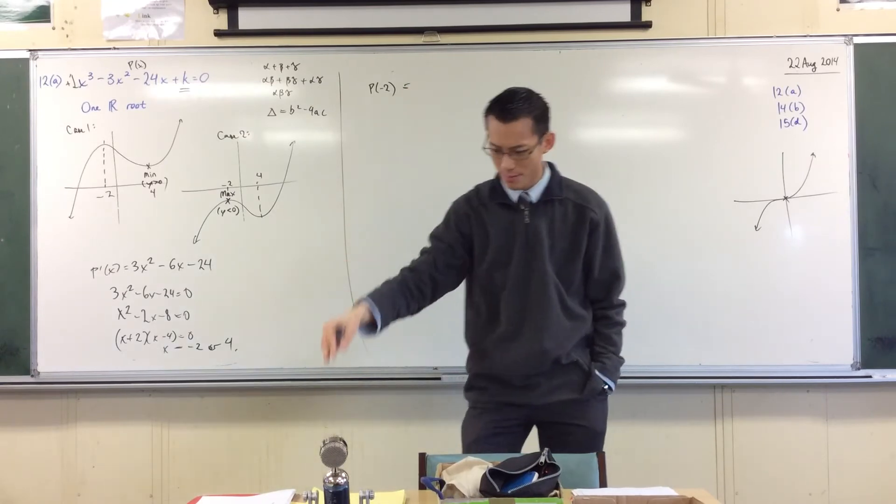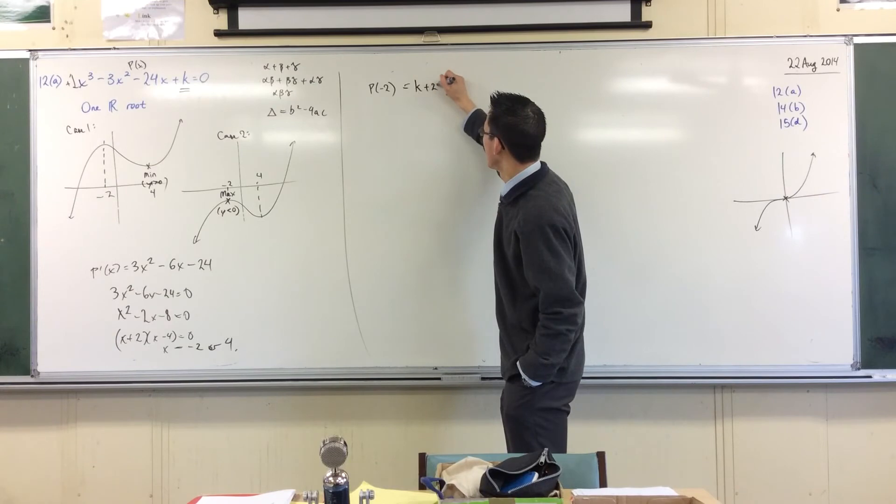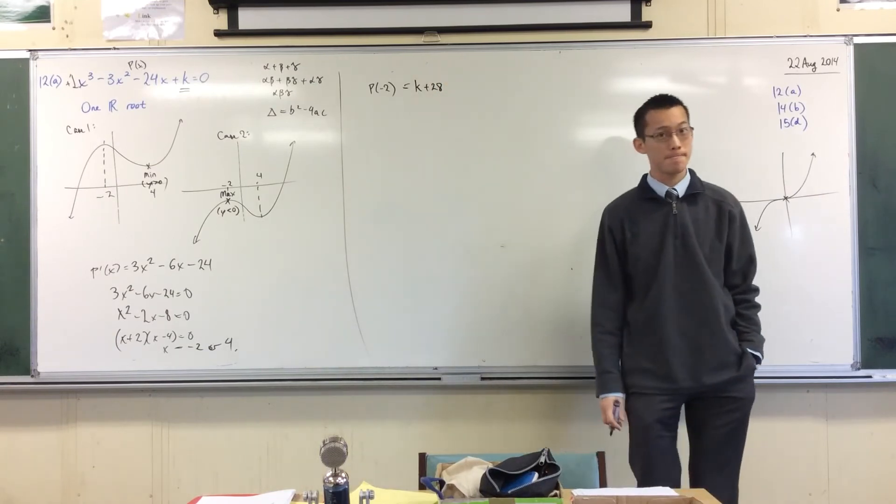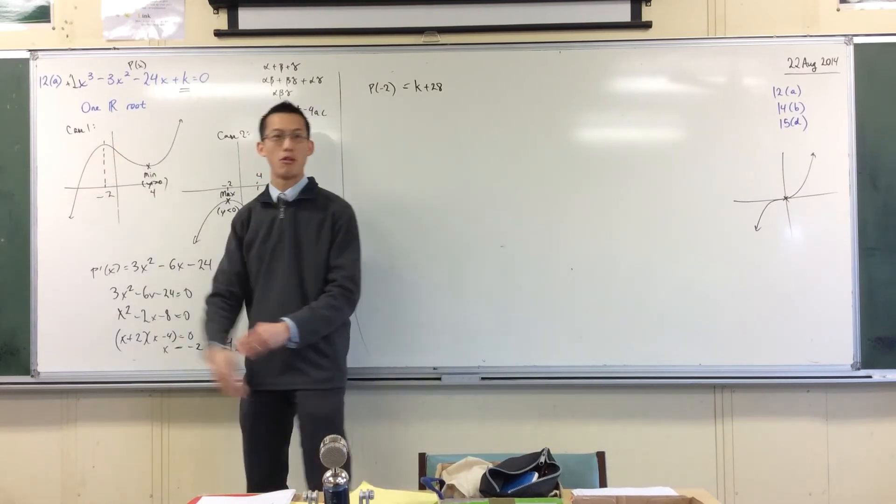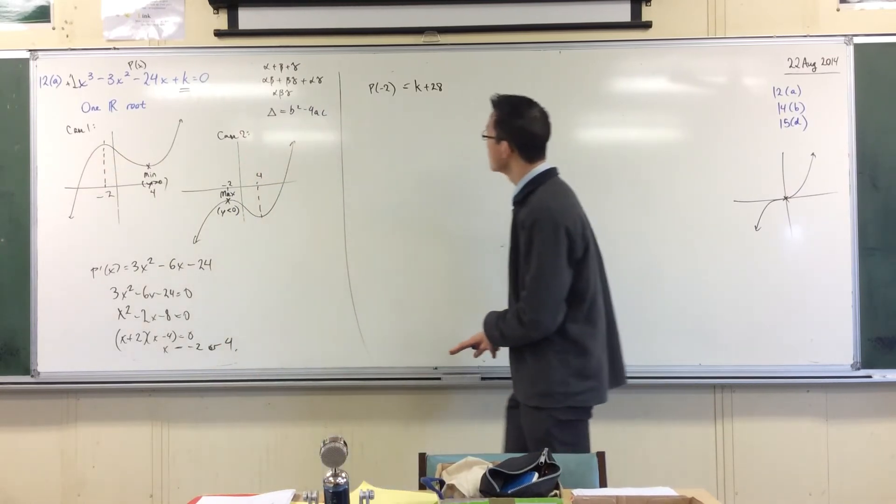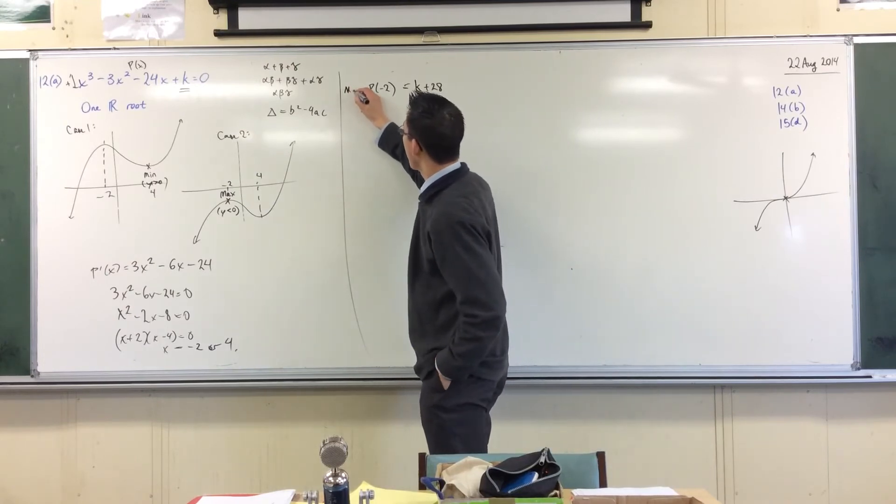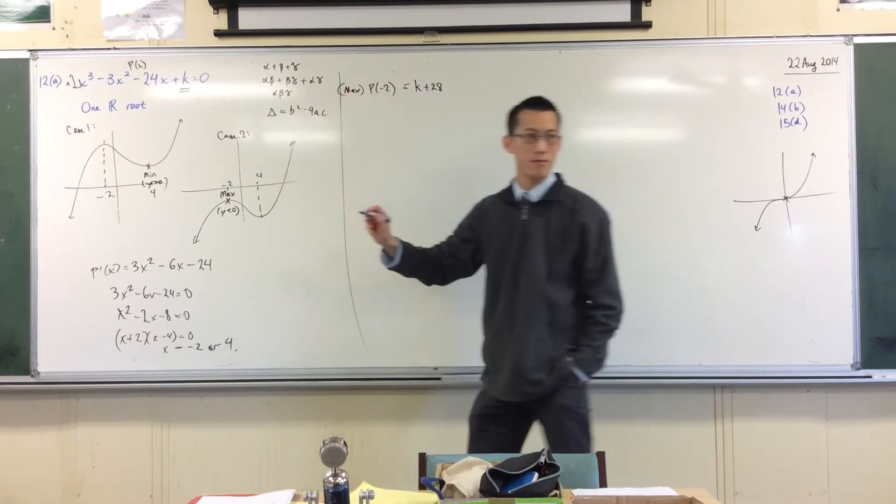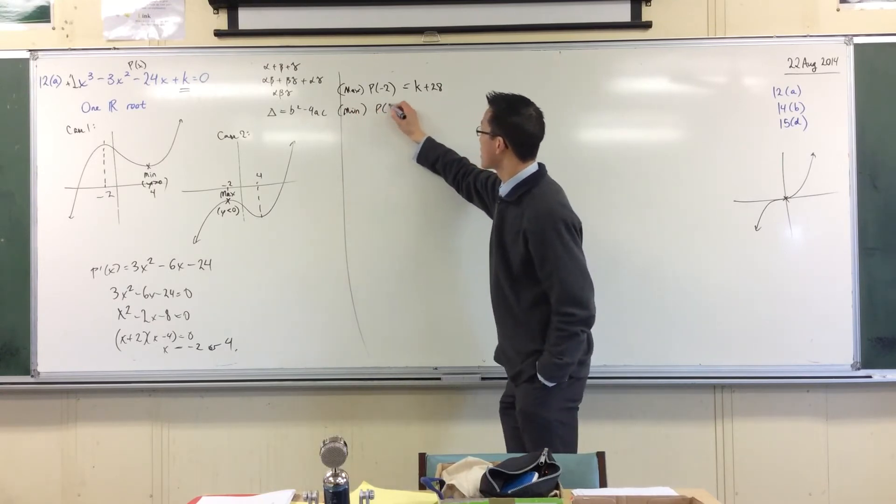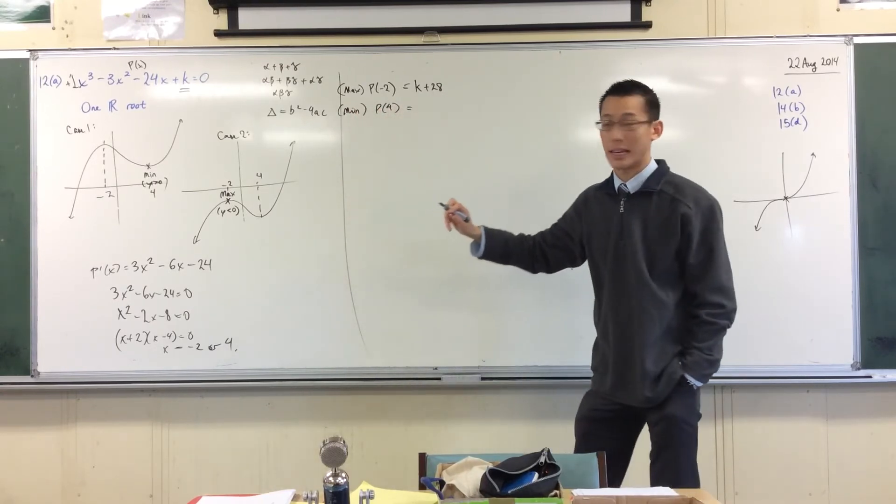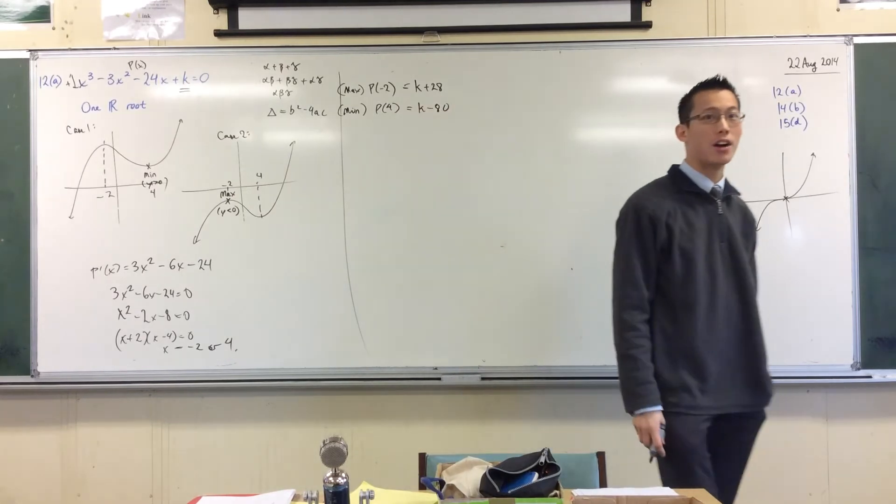p of negative 2. Which, by the way, you don't need any calculus to see that that's going to be the maximum. It's because of the leading coefficient. Like I said, it's sign. What is p of negative 2? I think you evaluate it. I've already evaluated. You get, don't forget there's a k in there. You get k plus 28. So you can see, based on the value of k, you're going to move that stationary point up and down. So this one, what did I say? Negative 2. This is the max. The other stationary point is the minimum and that's at p of 4. And I think from memory you get k minus 80 when you slap it in.